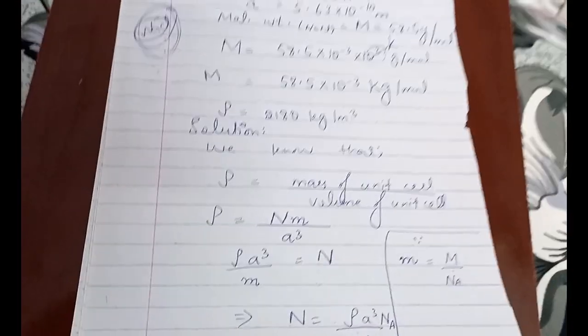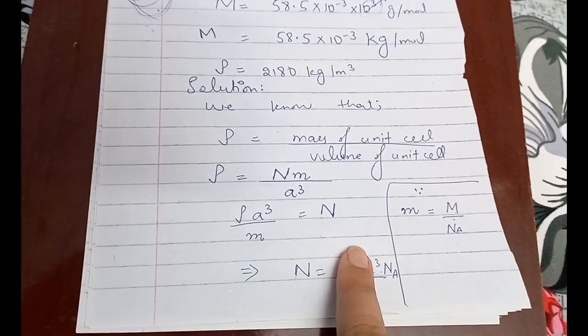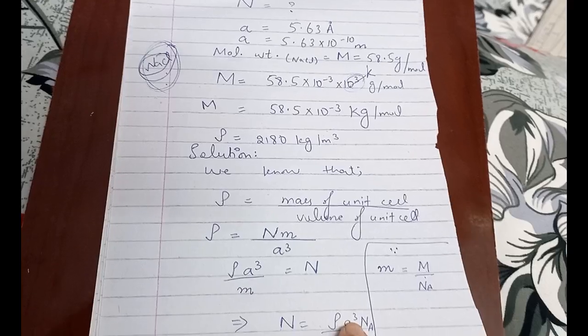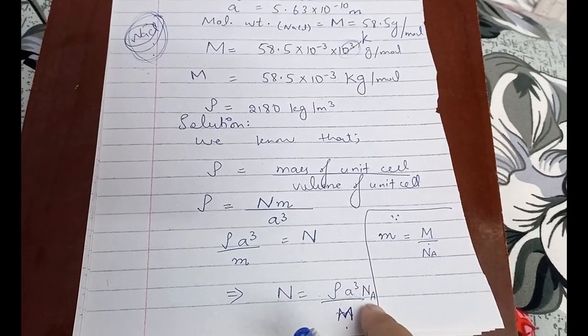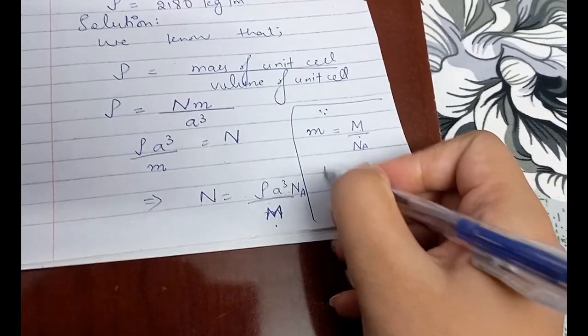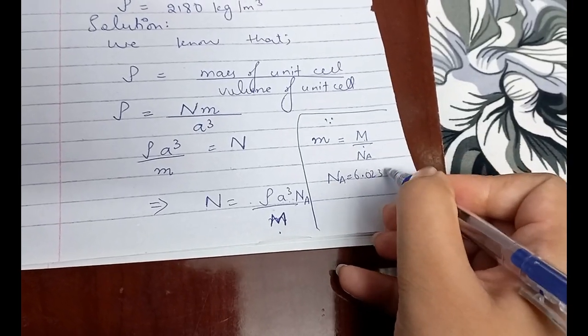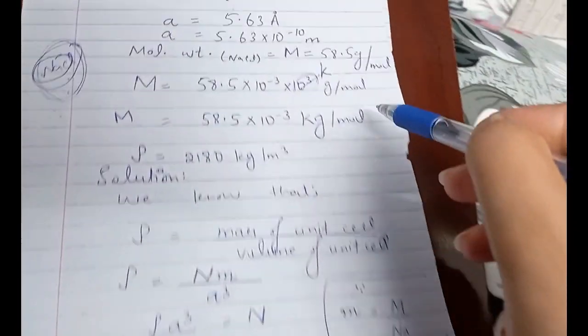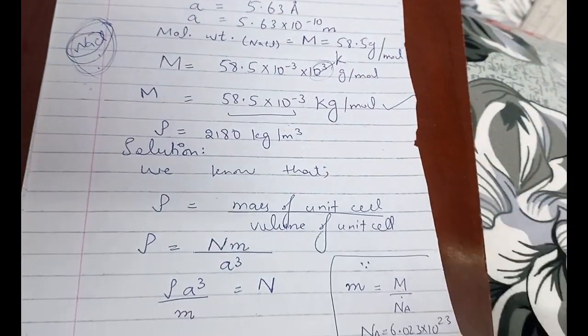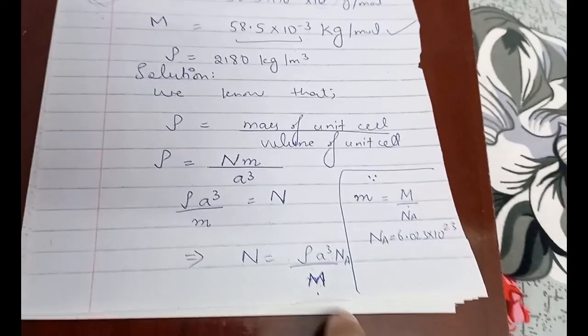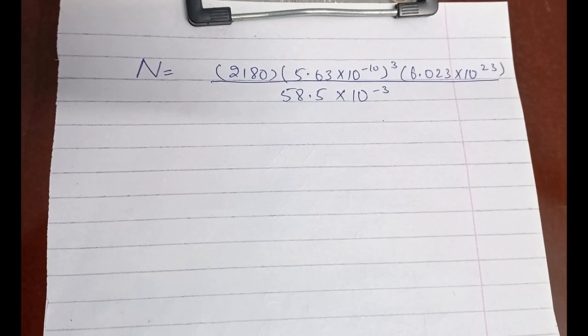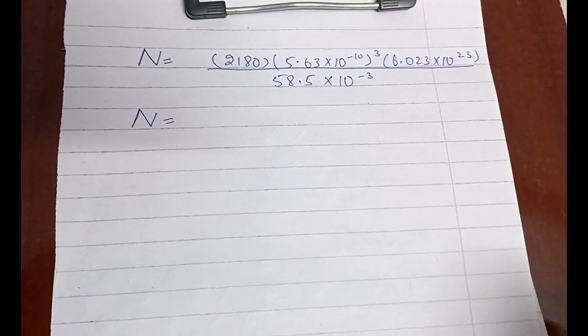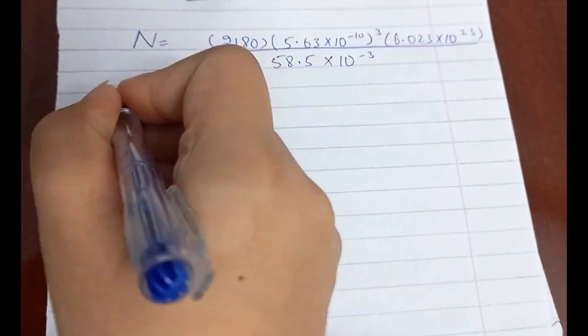We know rho is 2180, a is 5.63 times 10 to the power minus 10 and its whole cube, NA is Avogadro's number which equals 6.023 times 10 to the power 23, and molar mass in SI units is this, so we'll put this value 58.5 times 10 to the power minus 3 here. I have inserted all of these values into this expression and now we need to use the calculator.